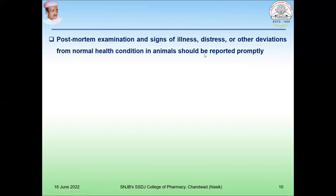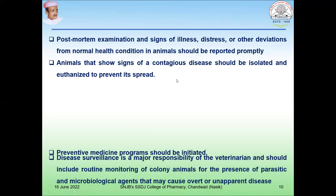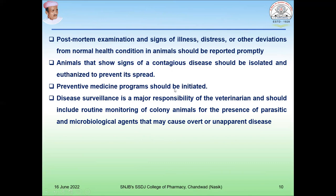If any signs of illness or distress are observed, they should be reported promptly. Animals that show signs of contagious diseases should be isolated and euthanized to prevent spread. If the condition is beyond the protection safety level, euthanasia can be performed. A preventive medicine program should be initiated by the animal house. Disease surveillance is a major responsibility of the veterinarian and should include routine monitoring of colony animals for the presence of parasitic and microbiological agents. The veterinarian must take care to prevent the spread of microbial disease.